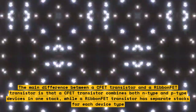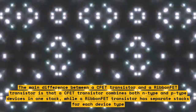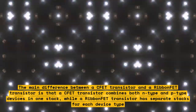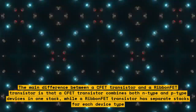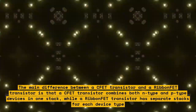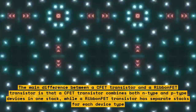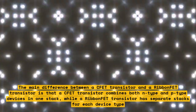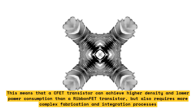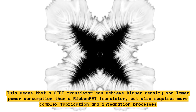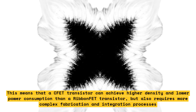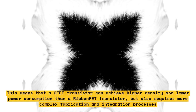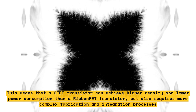The main difference between a CFET transistor and a ribbon-FET transistor is that a CFET transistor combines both N-type and P-type devices in one stack, while a ribbon-FET transistor has separate stacks for each device type. This means that a CFET transistor can achieve higher density and lower power consumption than a ribbon-FET transistor.